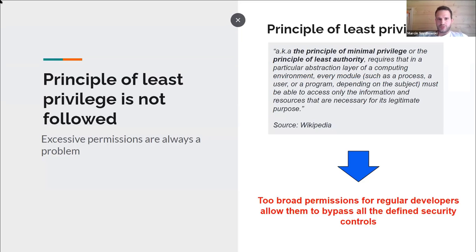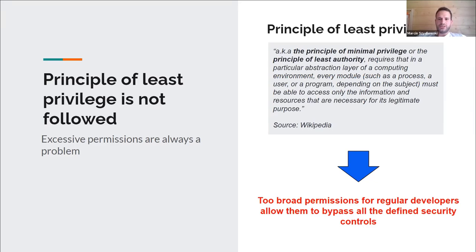Next is the principle of least privilege not being followed. This is one of the basic things in security, but it's not well-known in the context of software development tools. Developers like to have a lot of freedom and run with the highest permissions possible so they can fix problems as they occur. But if we have very permissive settings in our software development toolchain, people can do whatever they want and bypass everything we've defined. For example, someone running with administrator permissions on your SCM tool can simply disable branch protection.